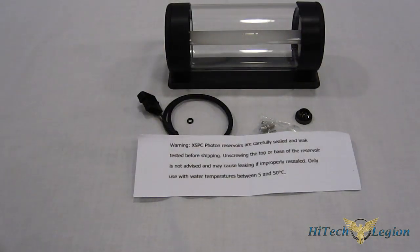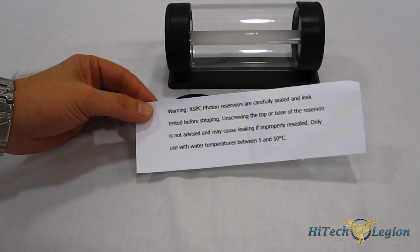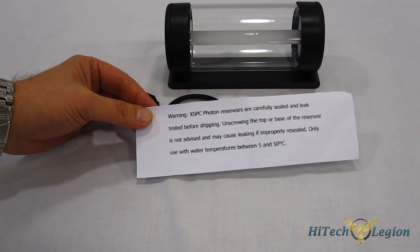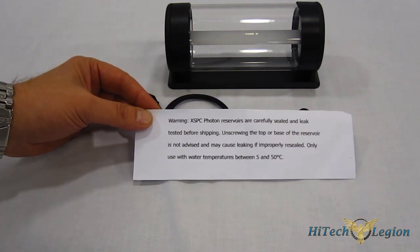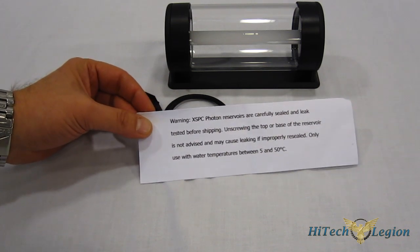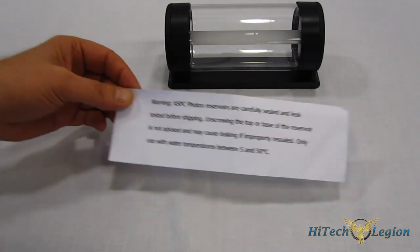Looking at the accessory kit for the photon, obviously a very simple kit. First thing we have is actually a warning tag. Each photon reservoir is individually leak tested and pressure tested and sealed. It is not advised that you ever take it apart because it may not go back together correctly and they can't guarantee the seal. So, just leave it all together and you're going to be good to go.